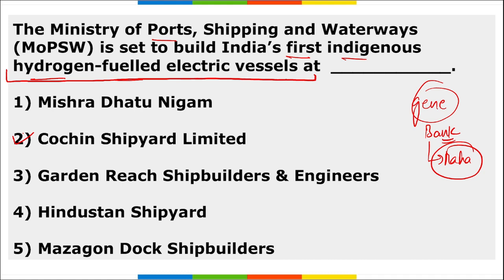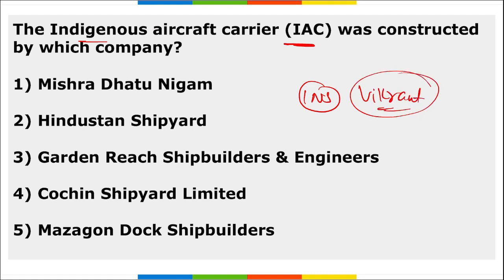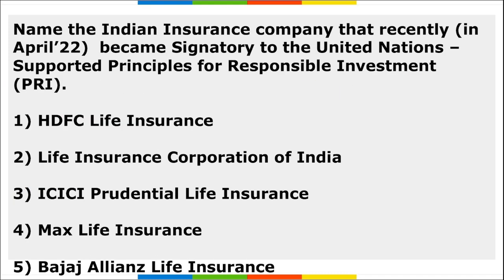India's first indigenous aircraft carrier, INS Vikrant, will be delivered to the Indian Navy in May. It was also constructed by Cochin Shipyard Limited. So both the indigenous aircraft carrier INS Vikrant and India's first hydrogen-fueled electric vessel will be built by Cochin Shipyard Limited.